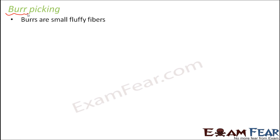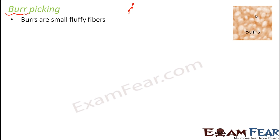Burrs are small fluffy fibers. When you wear woolen clothes, even though the entire sweater or jacket looks smooth, at certain places you see fluffy structures — very tiny ball-like structures. These are called burrs. Just like a rose stem has thorns, wool fibers also have burrs — knot-like structures present at certain places. This is a magnified image showing burrs as bubble-like structures on the wool itself.